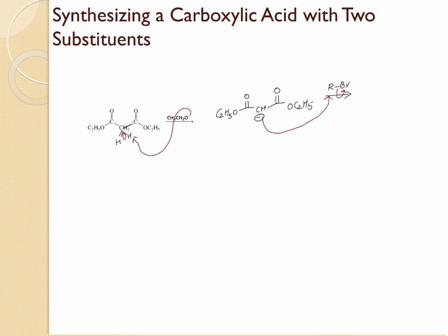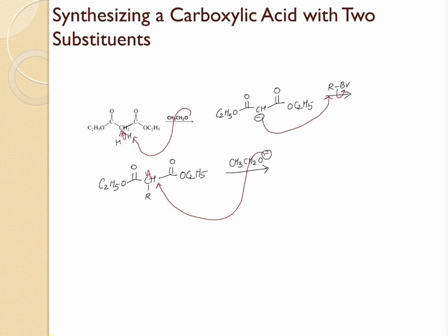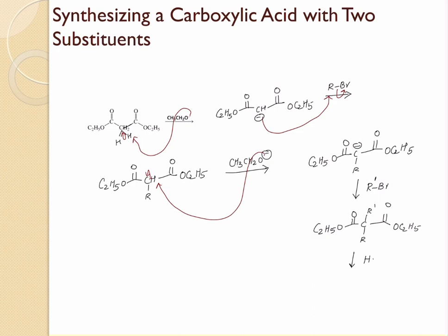Now you can add base again to abstract the second alpha hydrogen, thrusting electrons onto carbon to form the second enolate ion. You can then react it with the same alkyl halide or a different alkyl halide to get the second substitution on the alpha carbon. The next step is acid hydrolysis, which gives a dicarboxylic acid as the two ester groups are hydrolyzed, followed by decarboxylation as the final step.